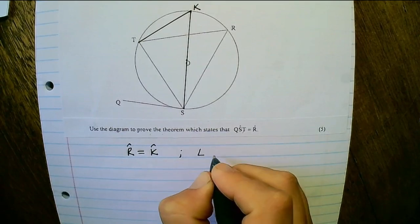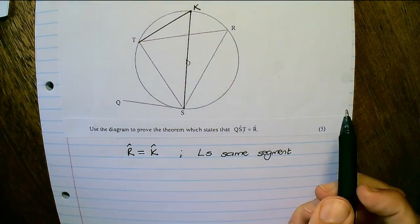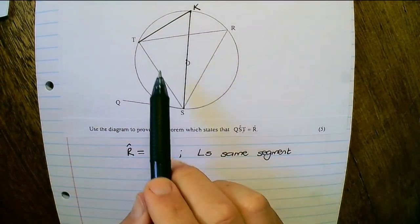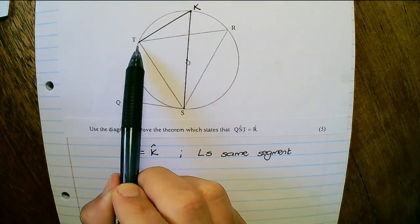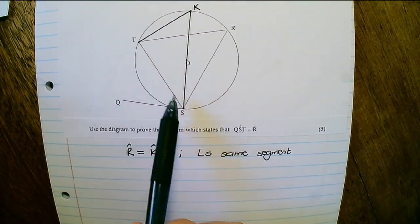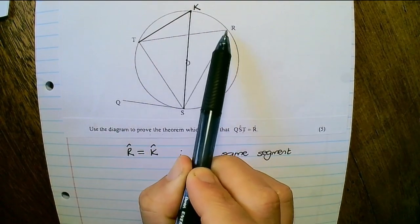So angle R is equals to angle K, angles in the same segment. It's not called the butterfly rule or anything like that. What it simply means is that TS subtends equal angles.